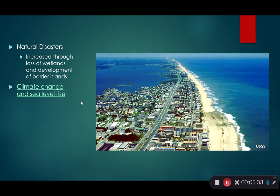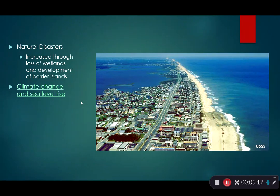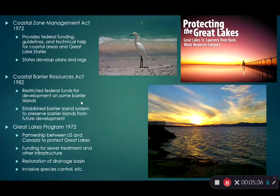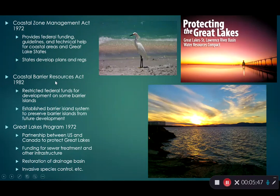Miami's stormwater system, designed to move water out to the ocean during thunderstorms, is now creating a pathway for sea level rise to flood inland neighborhoods. Some policies and regulations have been put in place to mitigate coastal damage. The Coastal Zone Management Act, passed in 1972, provides federal funding, guidelines, and technical assistance for coastal areas and Great Lakes states.